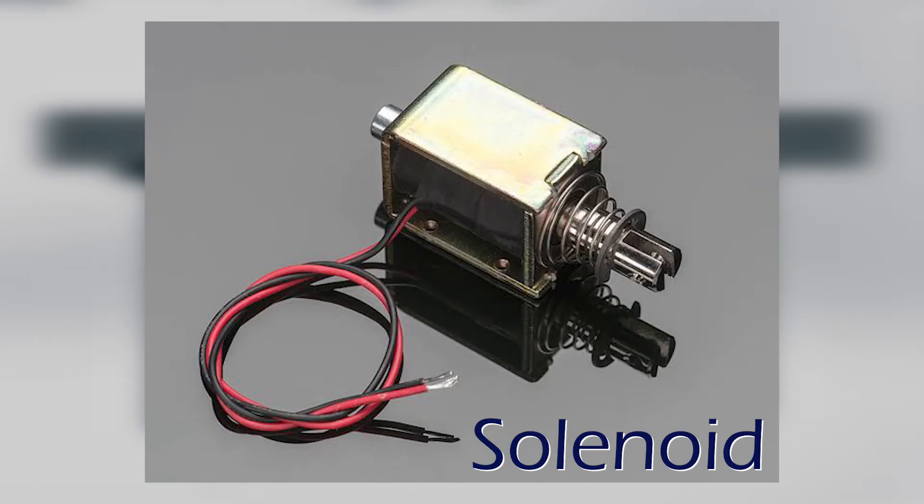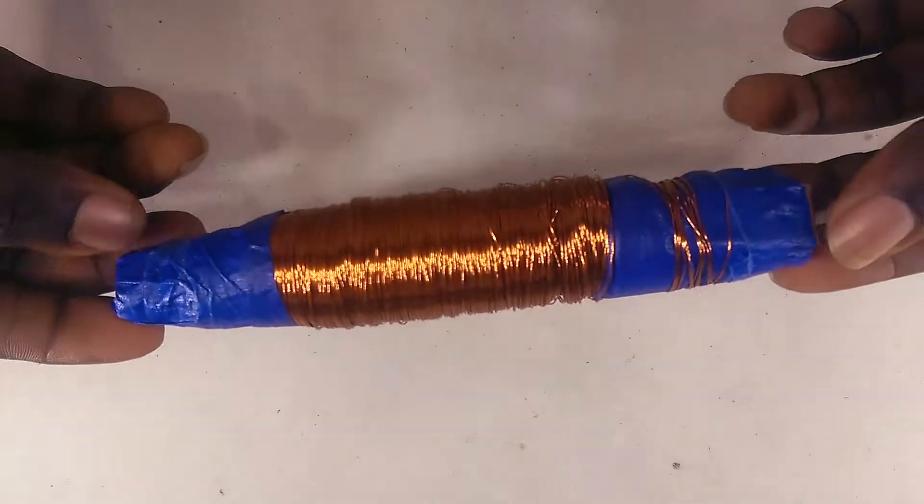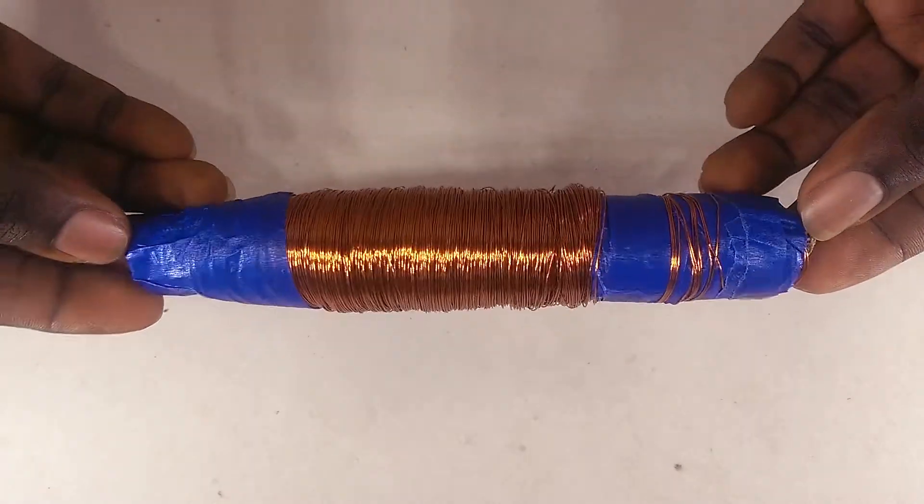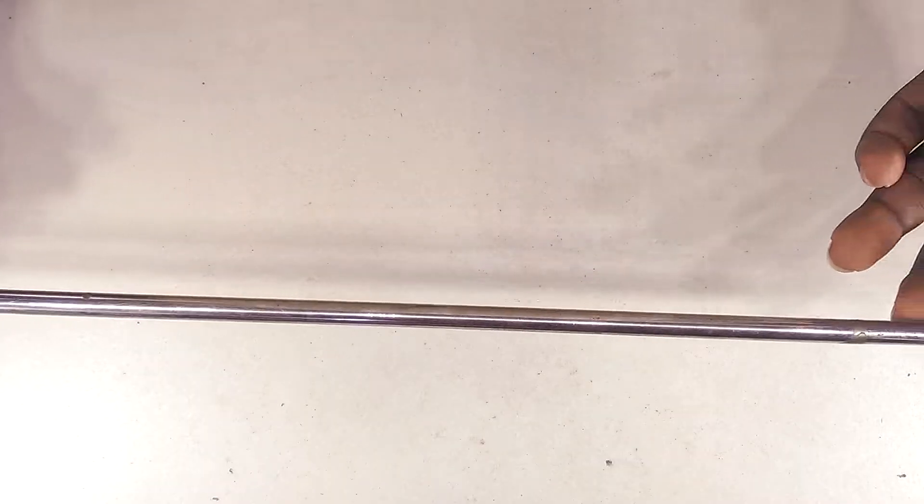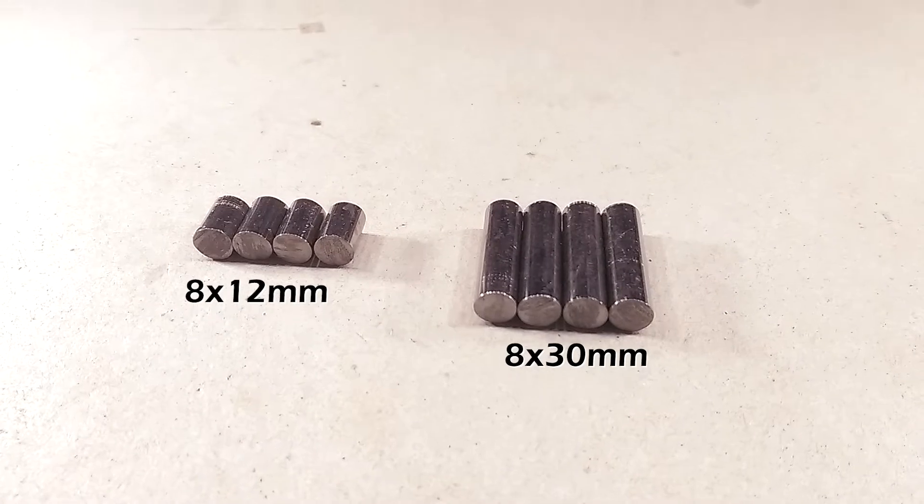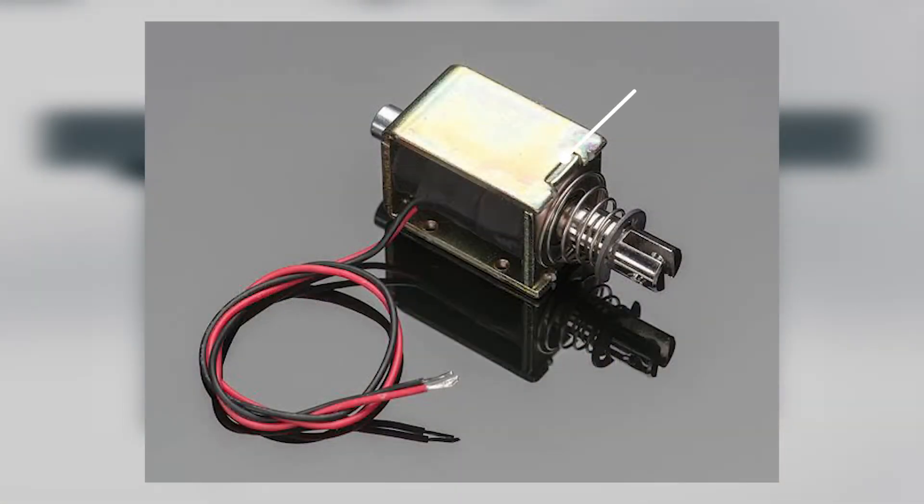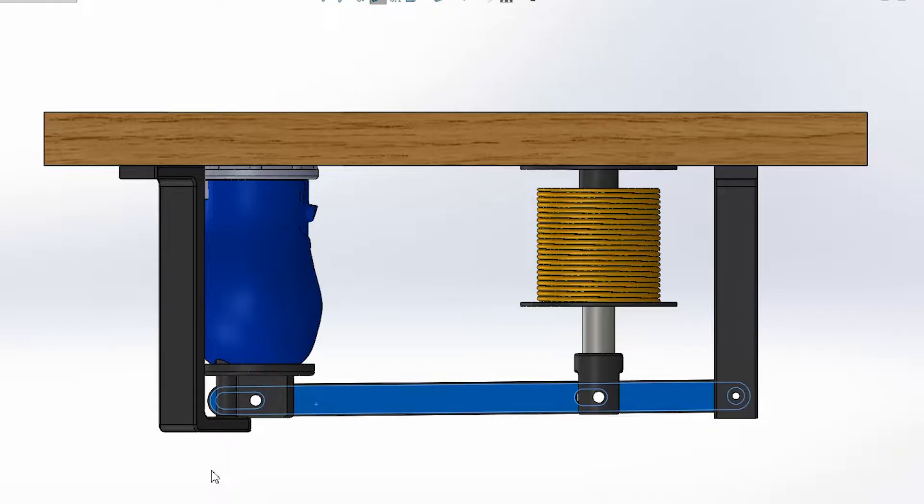Solenoids are really easy to make too. All you need is some roll of insulated copper wire and a steel rod you can cut into different lengths. The only part that might be a little tricky to make is the body. This is usually made with high temperature plastic or metal to avoid deformation from the heat generated when current flows through the coil. But for this application, we can get away with using PLA since current will only be flowing through the coil for a few seconds at a time.